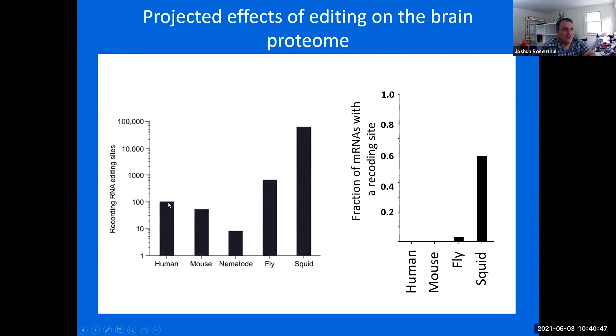In human transcriptome, and we really have only, nowadays it might be a little higher than this slide, but one or 200 bona fide RNA editing sites that recode codons. In squid, we have close to 60,000.